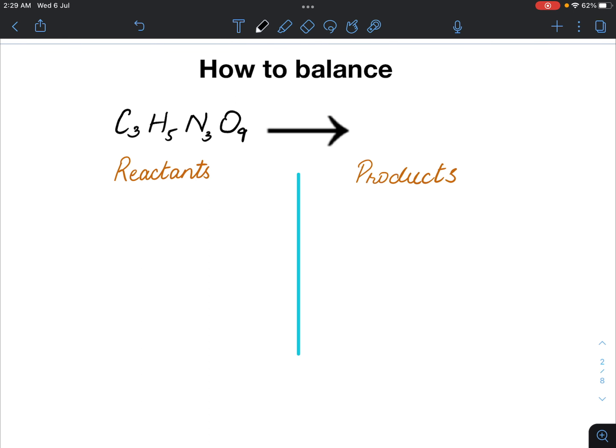Hello and welcome to today's video. Let's see what happens when we decompose C3H5N309. We get carbon dioxide, nitrogen, oxygen and water.